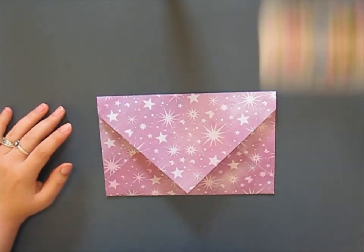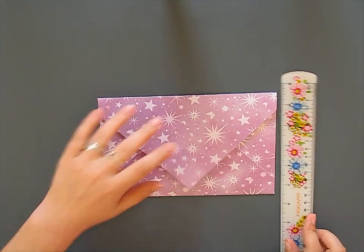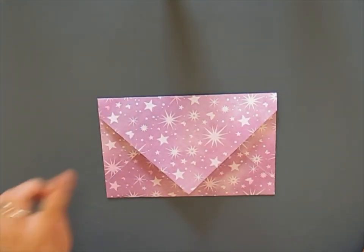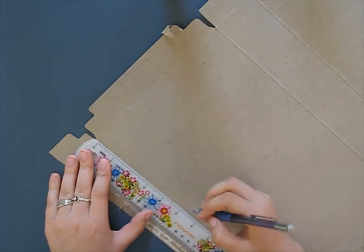The first thing you want to do is measure the length and the width of your envelope. You want to add an eighth of an inch to the length of your envelope and a fourth of an inch to the width of your envelope. This will give you a one-eighth of an inch overhang on your book.